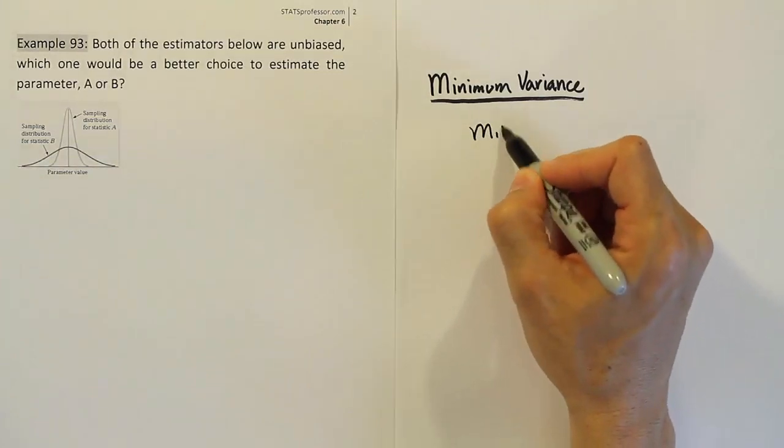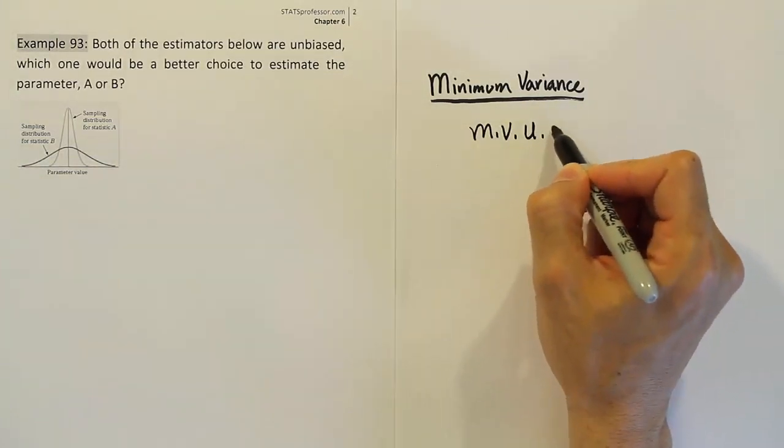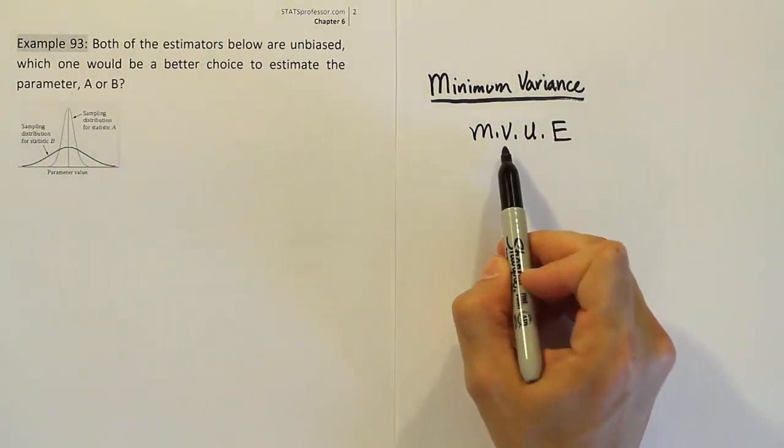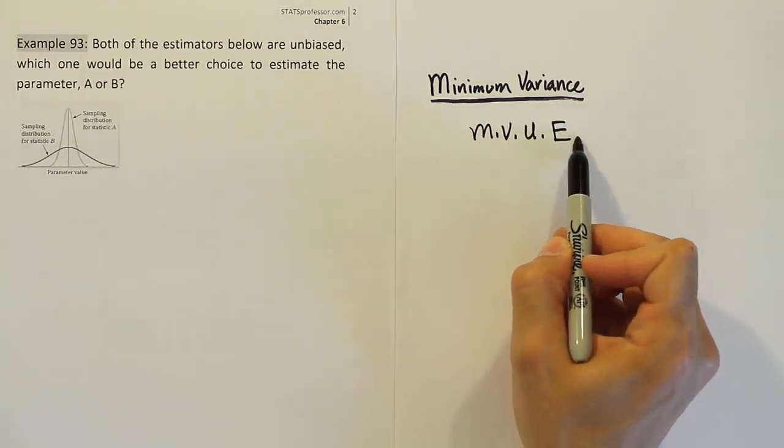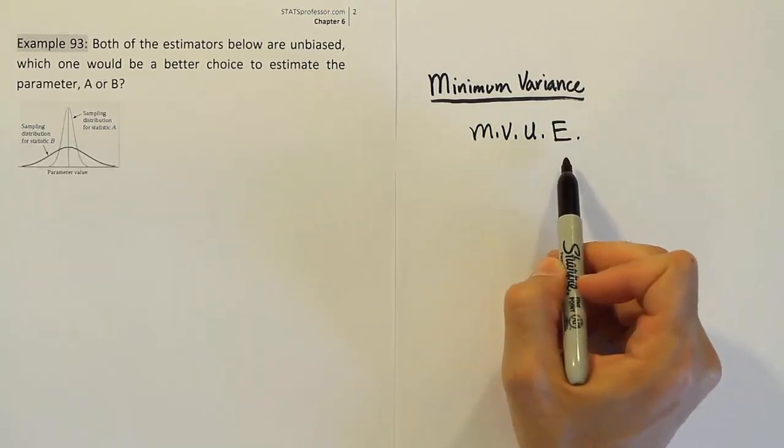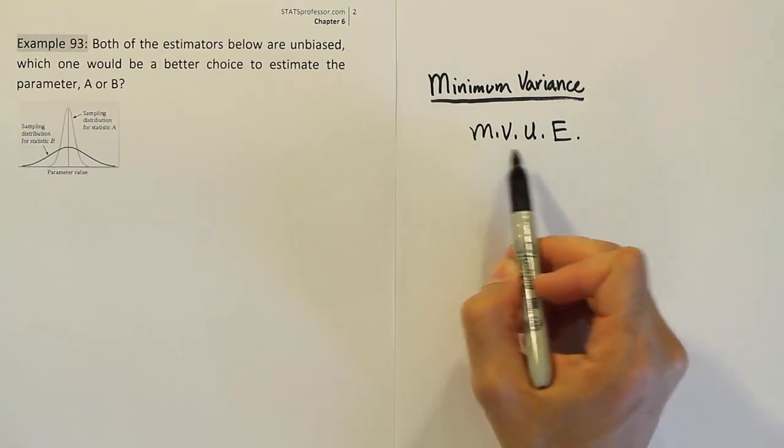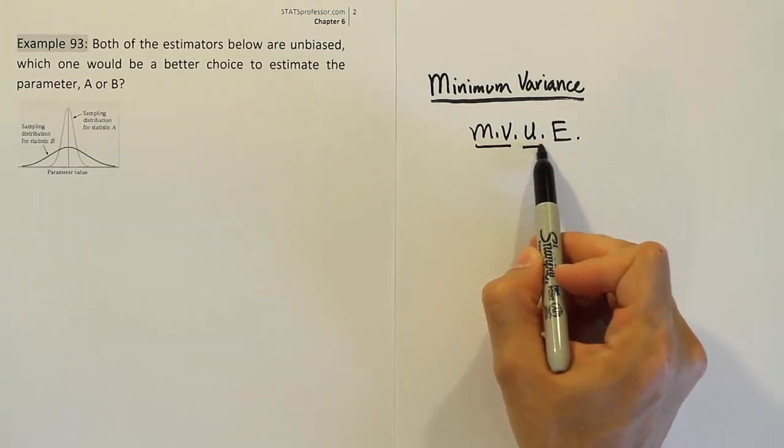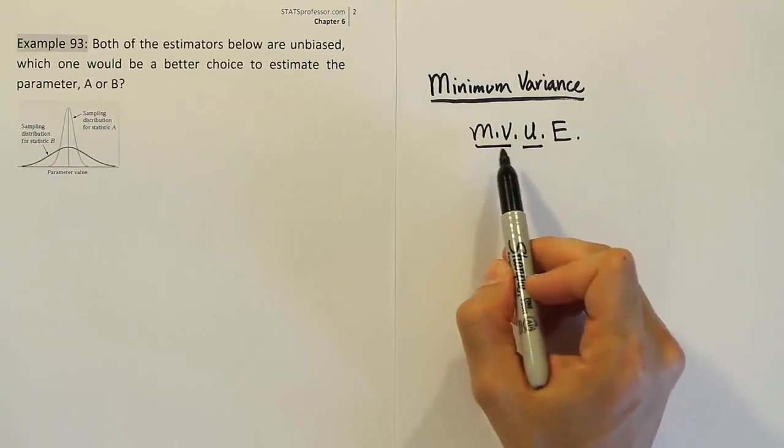If we take that highly clustered idea together with unbiasedness, we get something called MVUE. Minimum variance unbiased estimator. And so, this is essentially our most desired type of estimator. We want to use these estimators only as point estimators. So, we try to get the one that has the smallest variance that are also unbiased. If we can find those traits in one estimator, it'll be our winner.